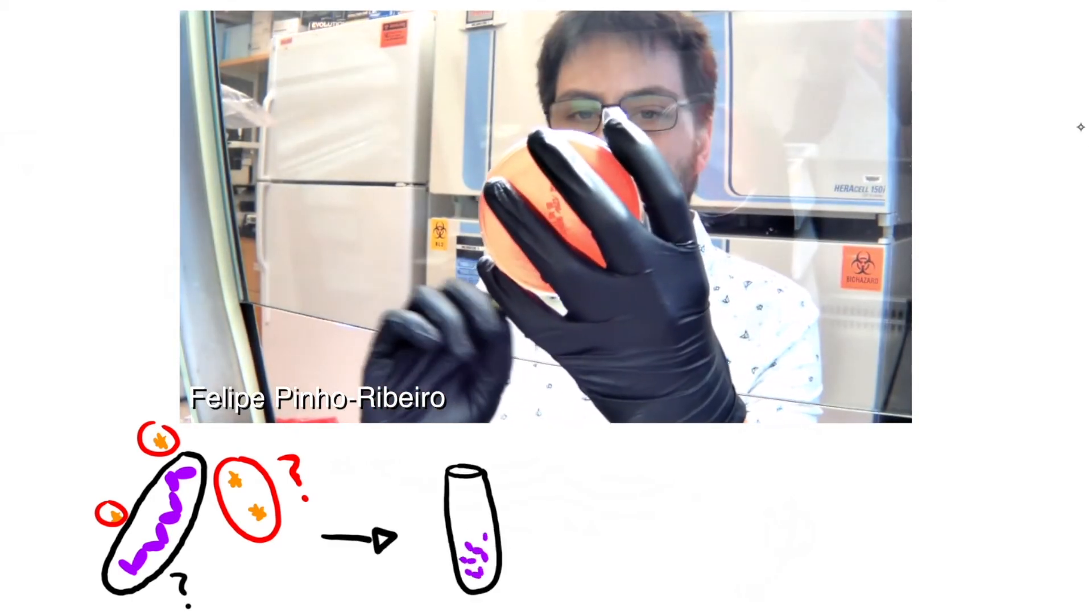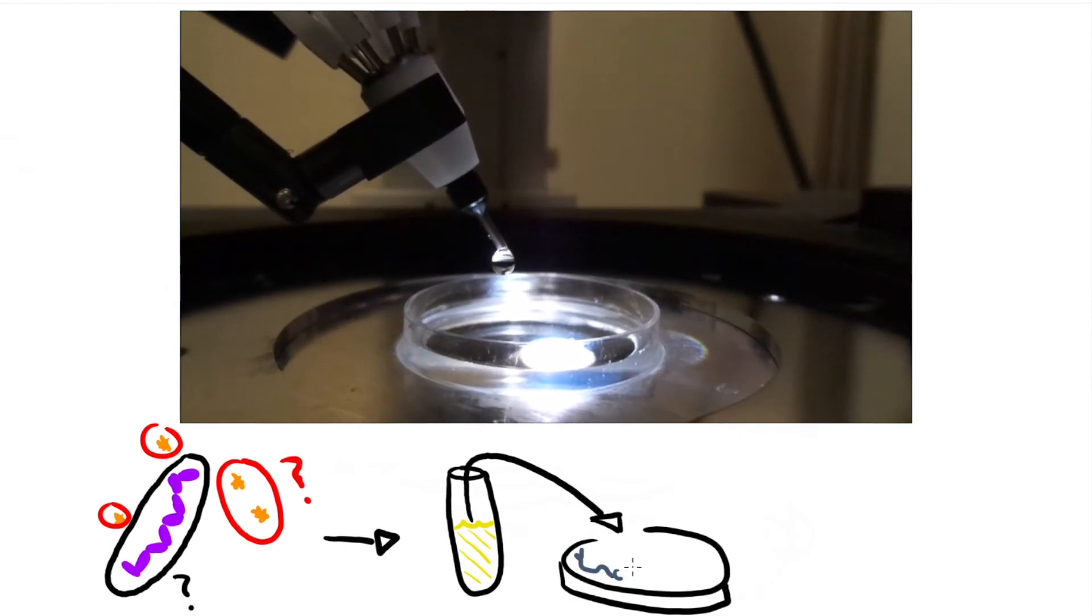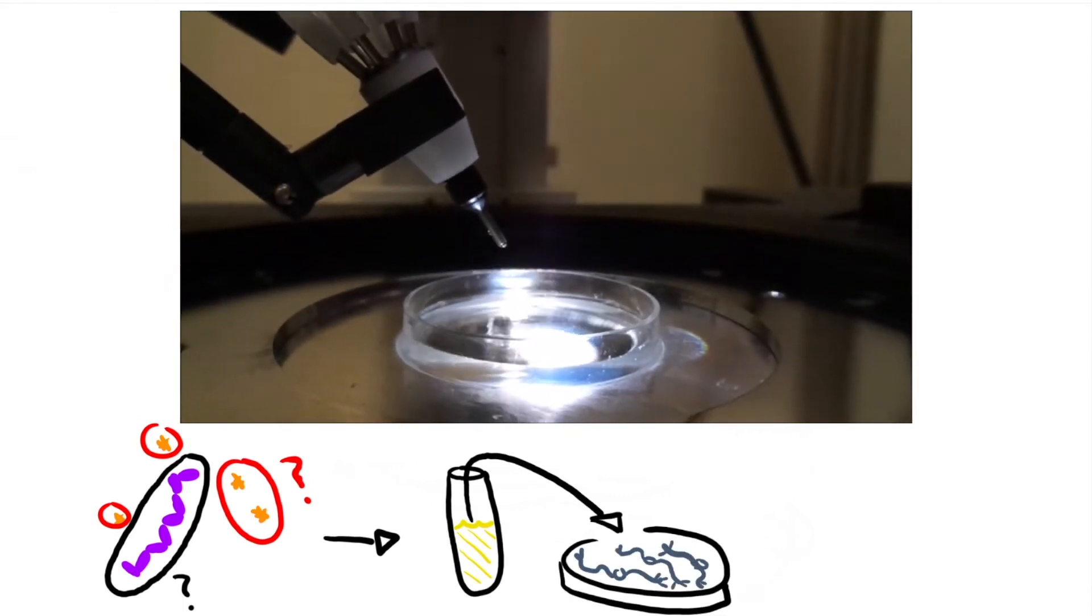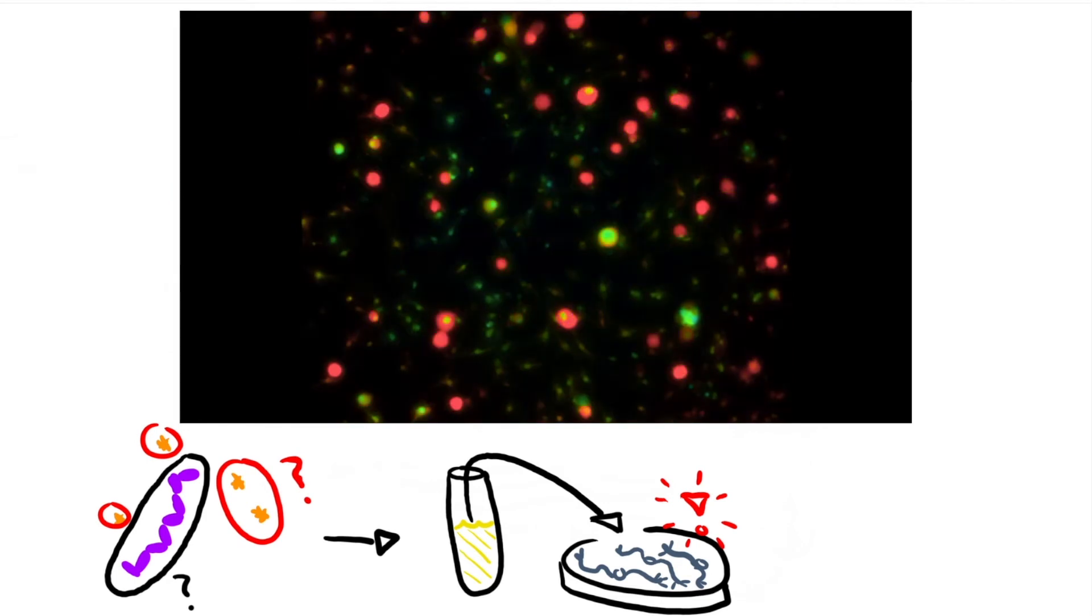To see if the bacteria themselves or something they secreted was responsible for the pain, they grew strep pyogenes in liquid culture, then removed the bacteria and added just the liquid to the neurons in a dish. The neurons reacted the same way to just the liquid as they did when the bacteria was present, meaning that the bacteria were secreting something.